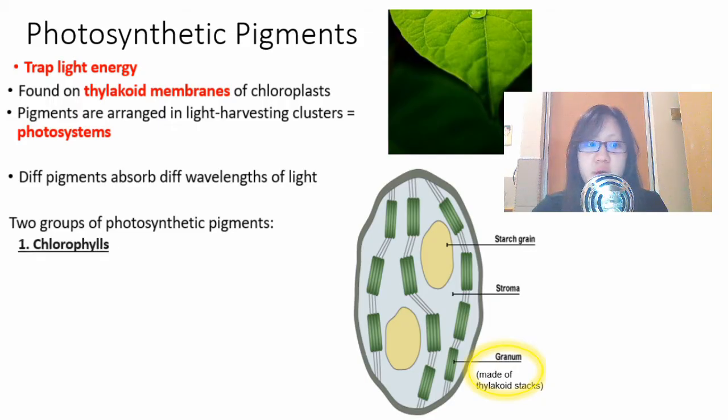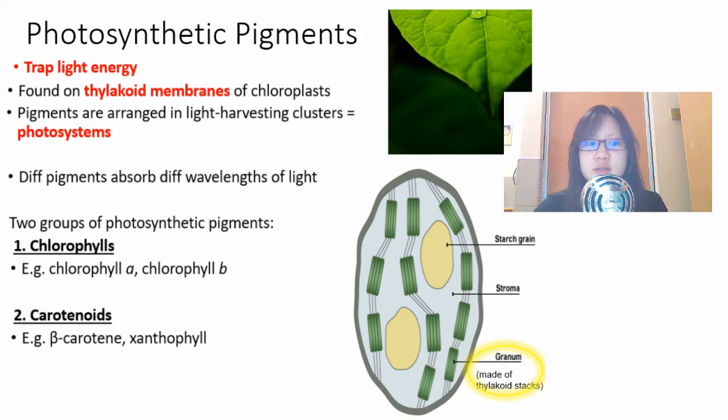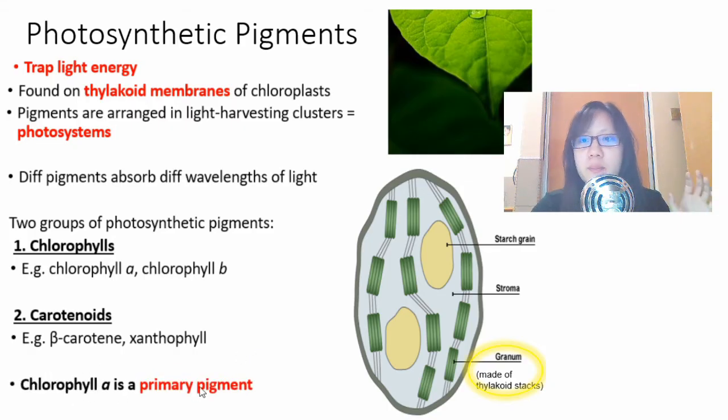There are two groups in specific. Number one is chlorophylls, for example chlorophyll A and chlorophyll B, not so hard to remember. Number two is carotenoids and the two examples you learn about are beta-carotene and xanthophyll. Of all these photosynthetic pigments, only chlorophyll A is a primary pigment.